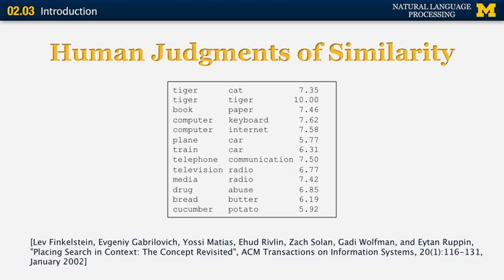Let's start first with some human judgments of similarity. I'm showing you here an example from a paper by Finkelstein et al. from 2002, where they asked people to determine how similar two words are. They gave them words like 'tiger' and 'tiger', and obviously they got the maximum similarity score from the human judges — in this case 10 out of 10. Then they gave them 'tiger' and 'cat', and they got a similarity of an average of 7.35. 'Book' and 'paper' had a similarity of about the same range, and 'computer' and 'keyboard' also about 7.5.